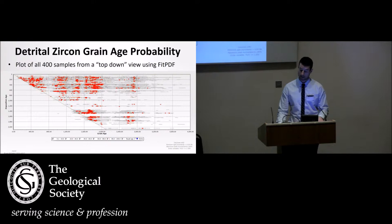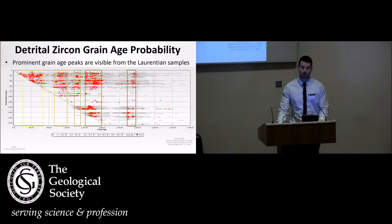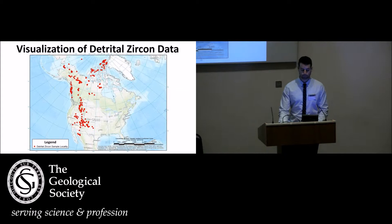This allows me to look at all 400 samples at the same time. By doing this, we can recognize prominent grain age peaks on Laurentia. I have these highlighted in colored boxes going from light yellow progressively to dark brown. This is important moving forward because I will represent source areas or provenance areas using these colors—light yellow for young grain ages and dark brown for older grain ages.